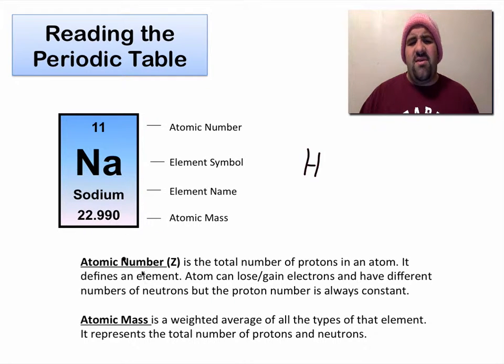And the atomic mass down here is a weighted average of all the different types of sodium that we find. It represents the total number of protons and neutrons. So there's 11 protons in sodium and about 23 protons and neutrons combined, which means 23 minus 11, there should be roughly 12 neutrons in sodium. And we'll talk about that in a second.